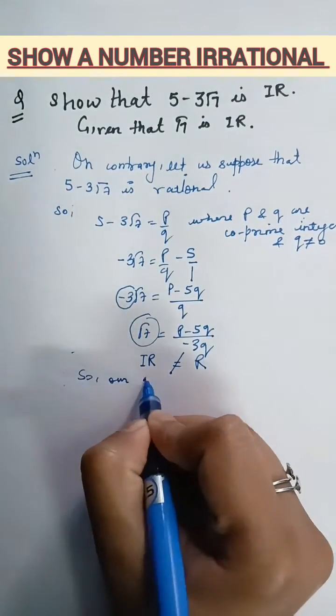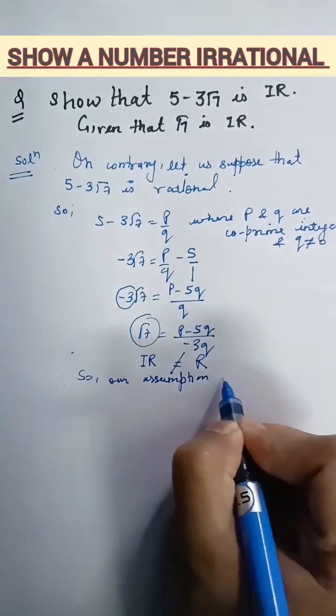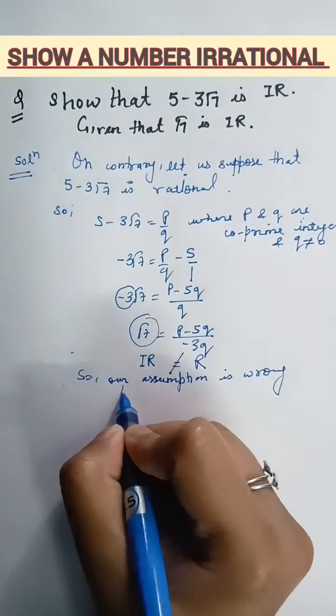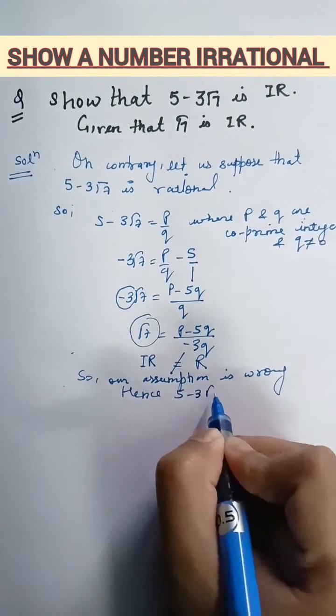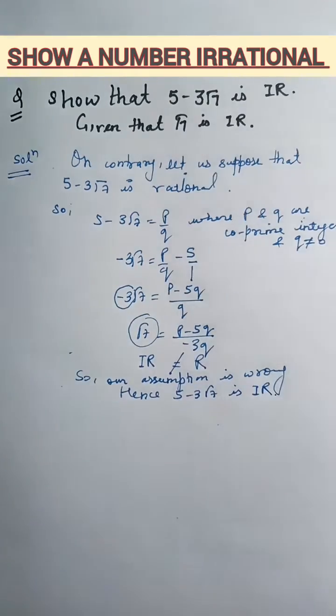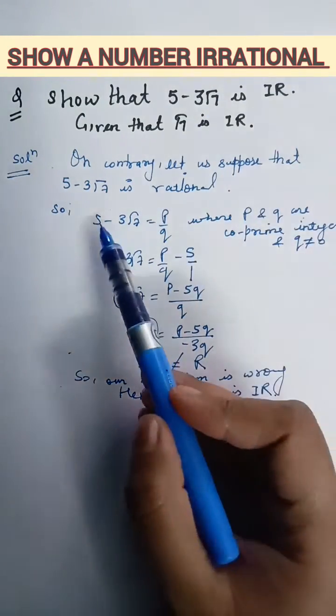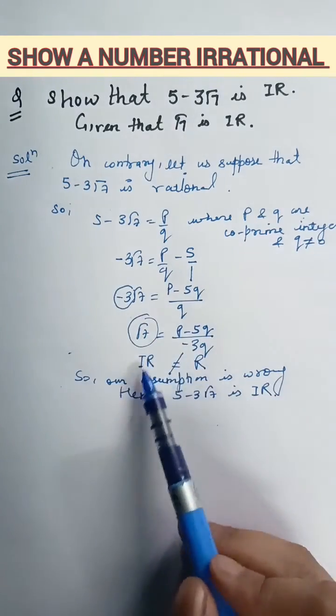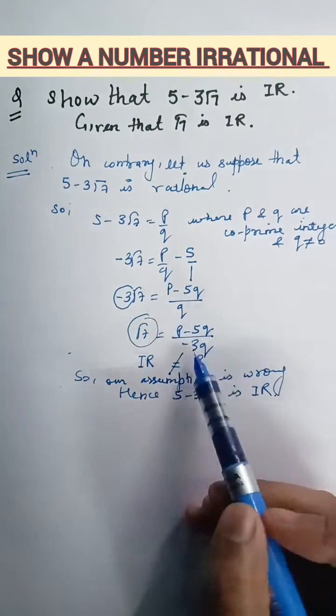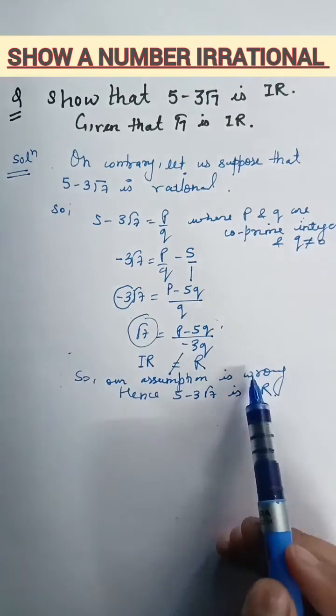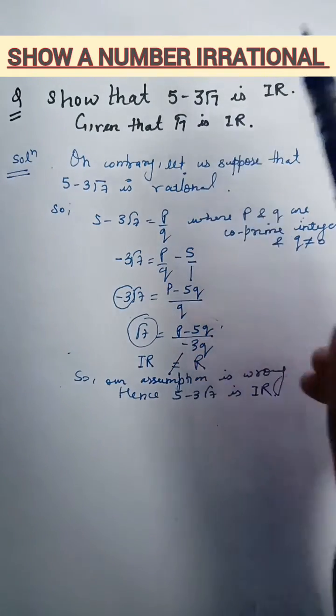So, our assumption is wrong. Hence, 5 minus 3 root 7 is irrational number. So, whenever you get a problem like this, first of all you have to rationalize your given number because it has to be equal to p by q. You have to shift all the numbers other than root. Then you can write the root as irrational and it can never be equal to rational number.